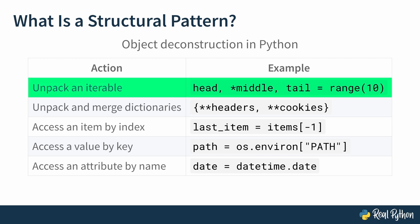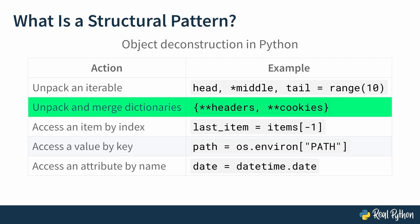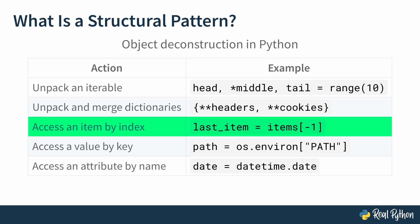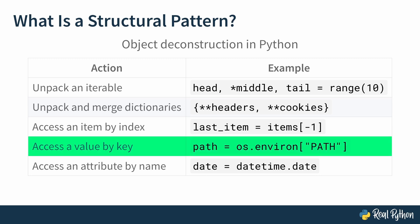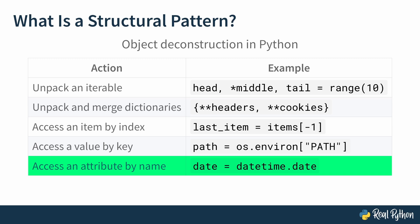Here are a few of the ways that Python supported object deconstruction prior to the introduction of pattern matching. You can unpack Python iterables using iterable unpacking and the star operator. For example, head, star middle, tail, equals range 10. This stores the first element of the range in head, the last in tail, and the remaining elements in middle. You can use object deconstruction to unpack and merge dictionaries. A dictionary literal with the contents star star headers, star star cookies, unpacks the headers and cookies dictionaries, and creates a new dictionary with the keys and values of both. Using square bracket accessors, you can access items by position or index in sequence types, like pulling out last item from the items list by accessing the element at index minus one. Or you can access items by key in mapping types like dictionaries, pulling out path from os.environ at the key path. Finally, accessing attributes of an object by their name can be done via the dot accessor, like getting date from datetime.date.